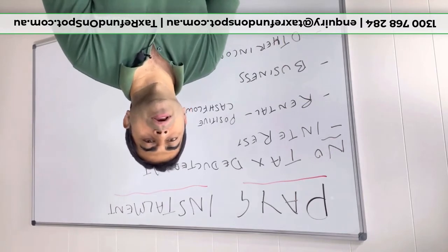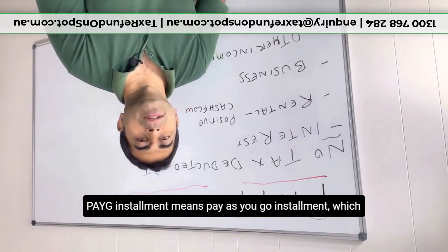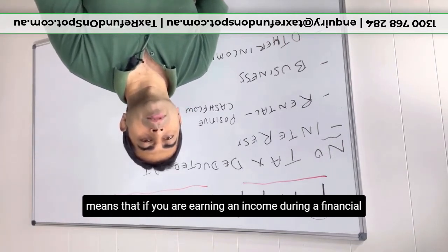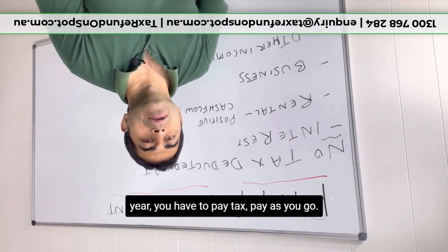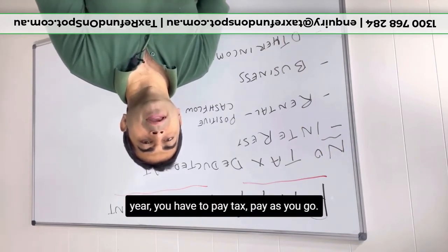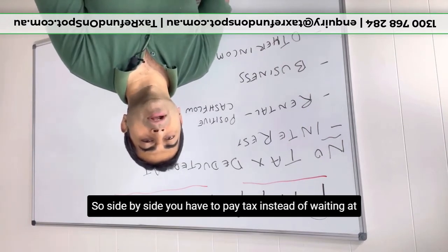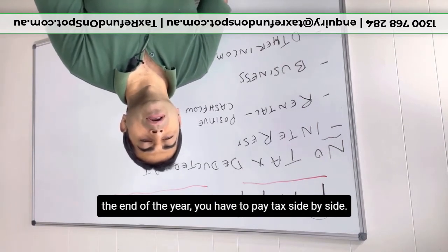Now what is PAYG installment? PAYG installment means pay as you go installment, which means that if you are earning an income during a financial year, you have to pay tax as you go. So side by side you have to pay tax, instead of waiting at the end of the year.